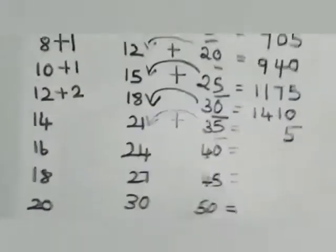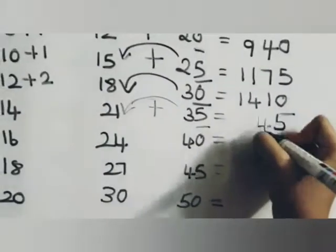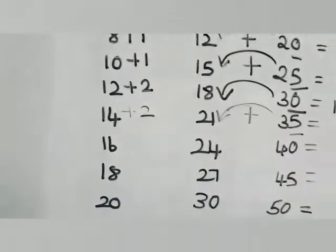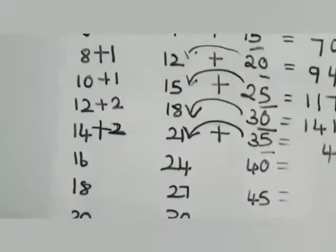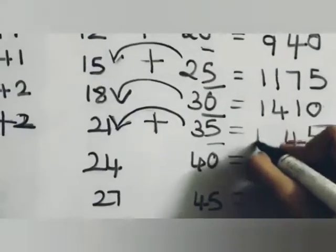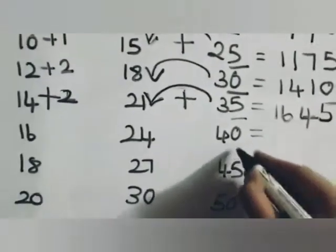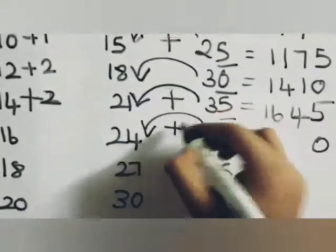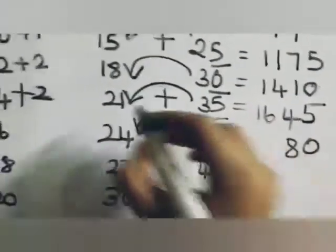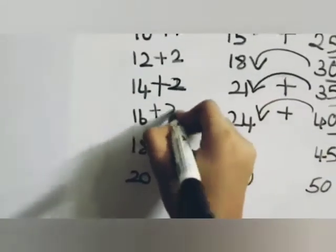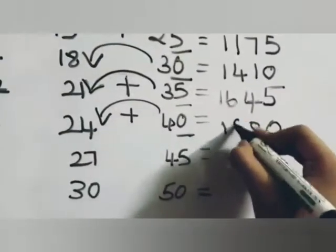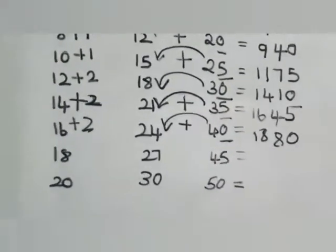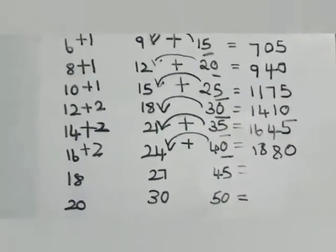Add two to twenty-four, it will be twenty-six. Write as such here. Next write zero as such, add four to twenty-four — that will be twenty-eight, add two to sixteen — that will be twenty-eight. So 235 multiplied by eight will be 1880.